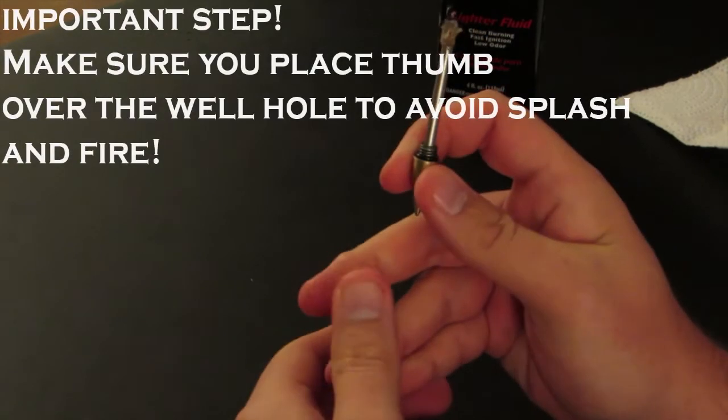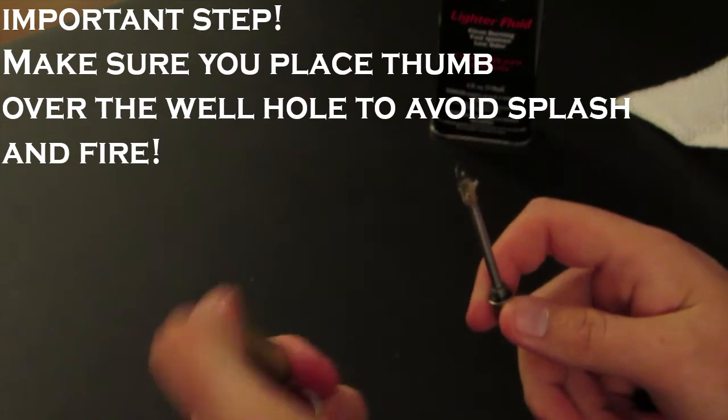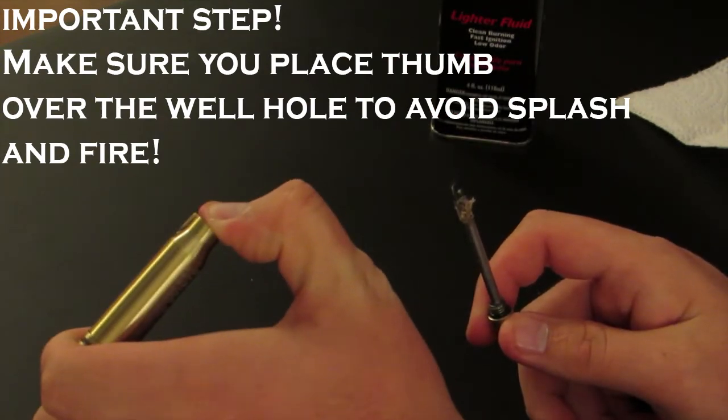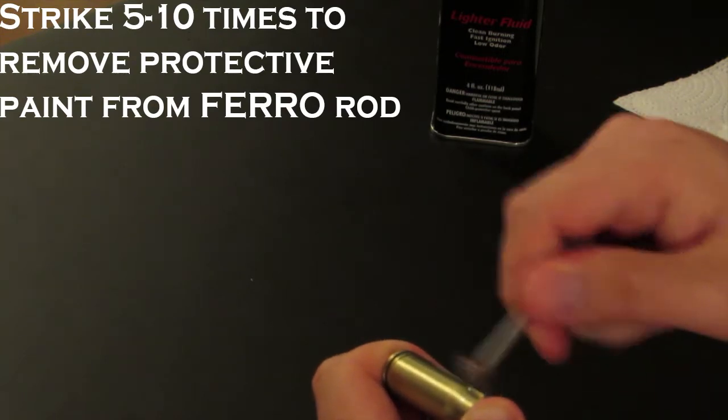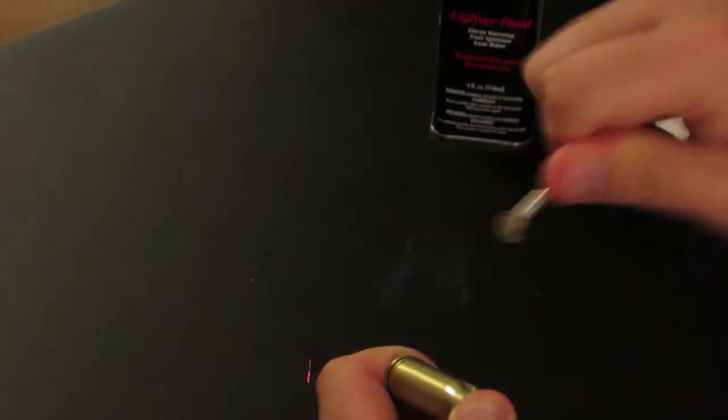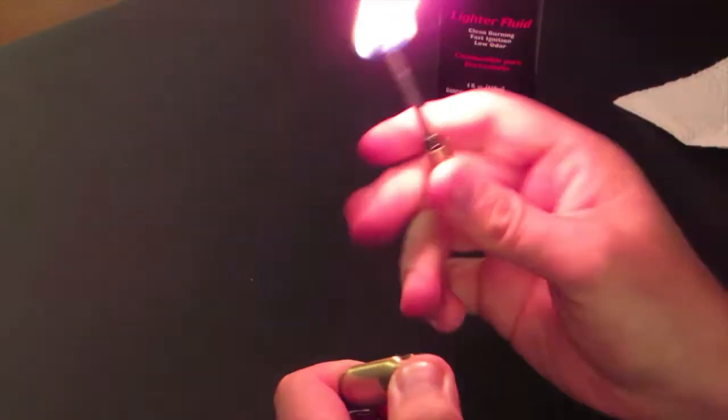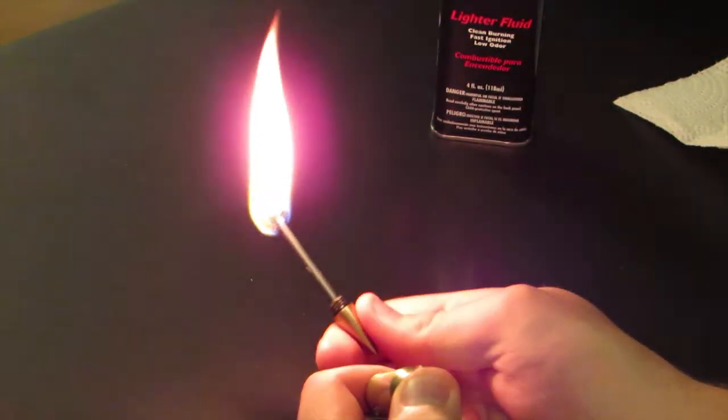Before you strike it up, you want to make sure you cover your thumb over the hole to avoid the splashing. That way there's no accidents. So you want to strike this five to ten times to get all the protective film off of it. There you go. Big flame.